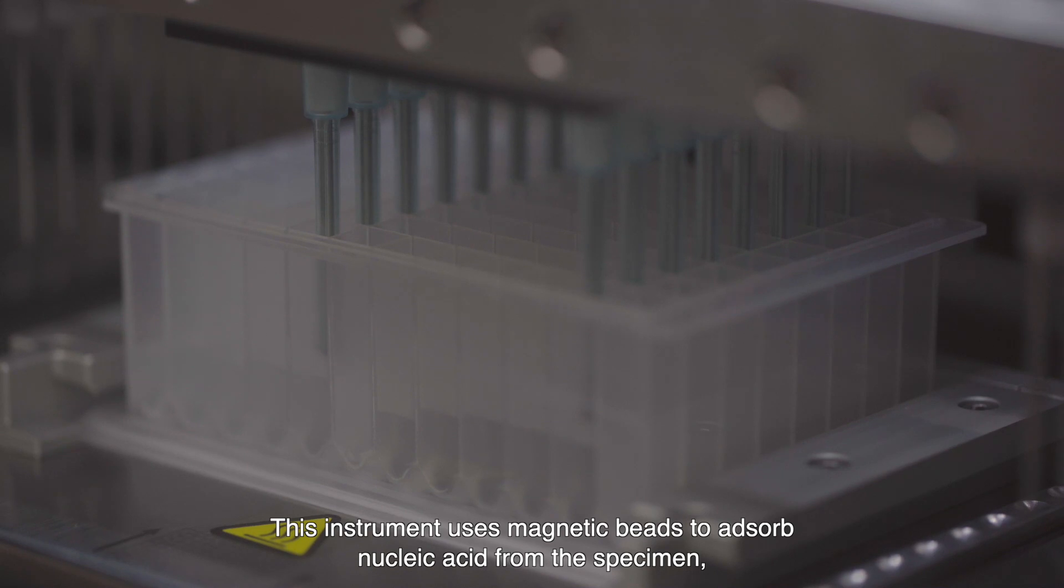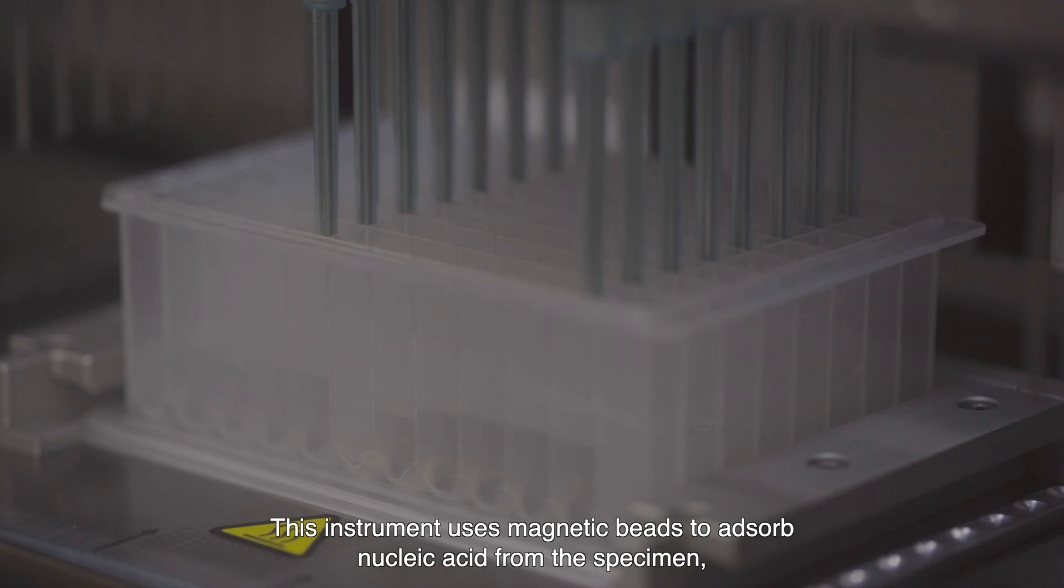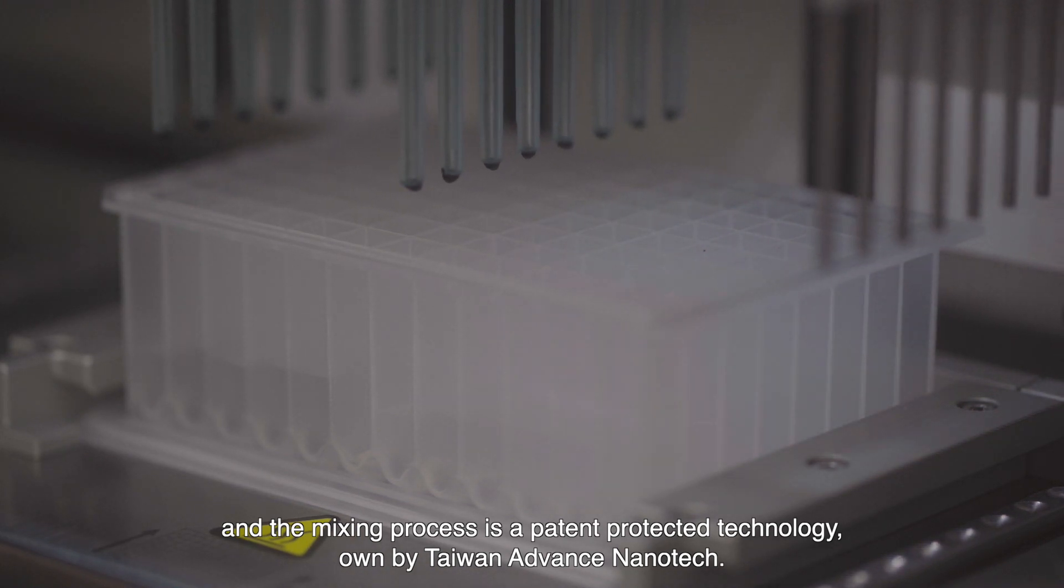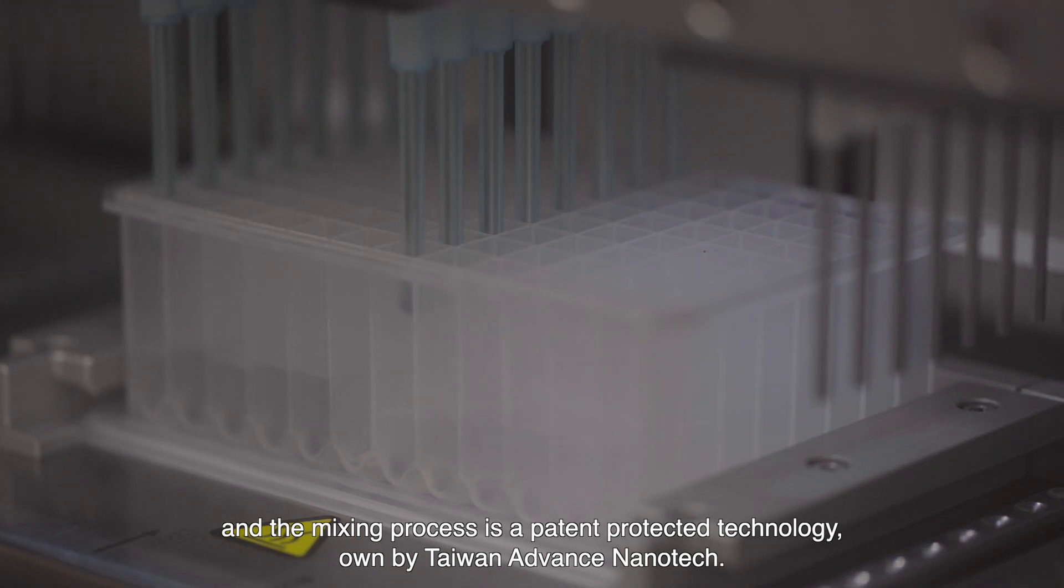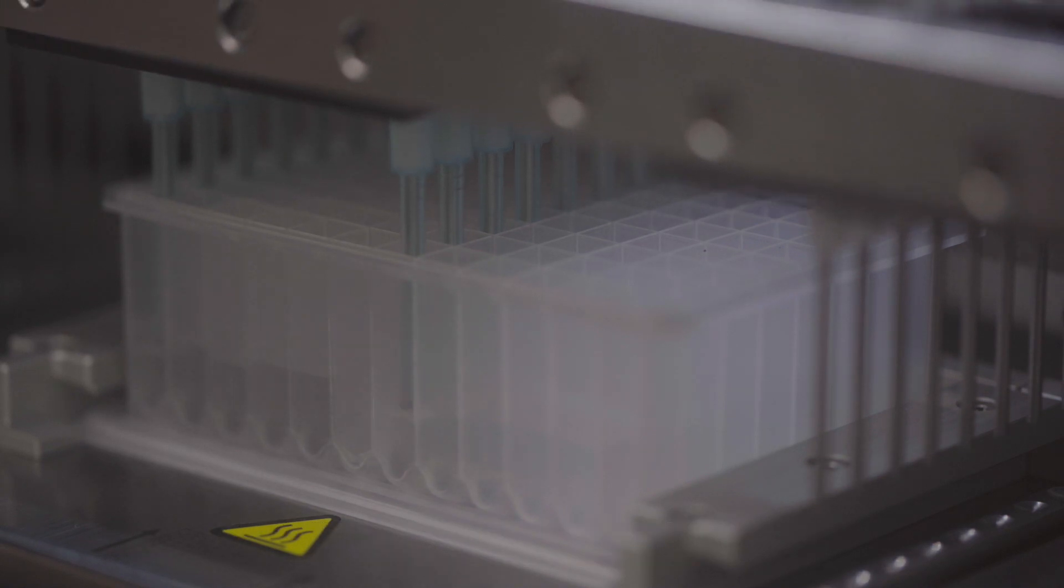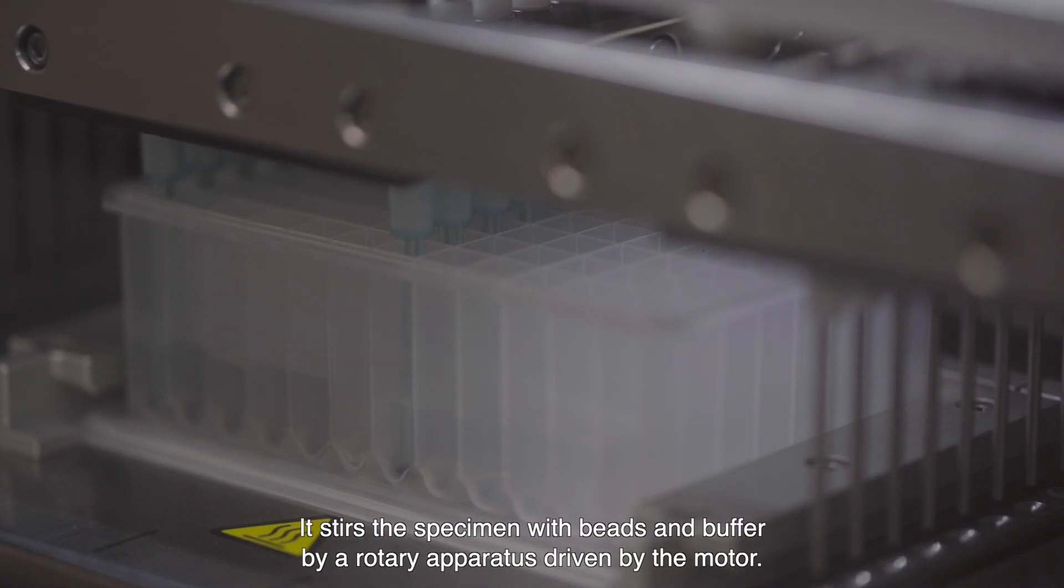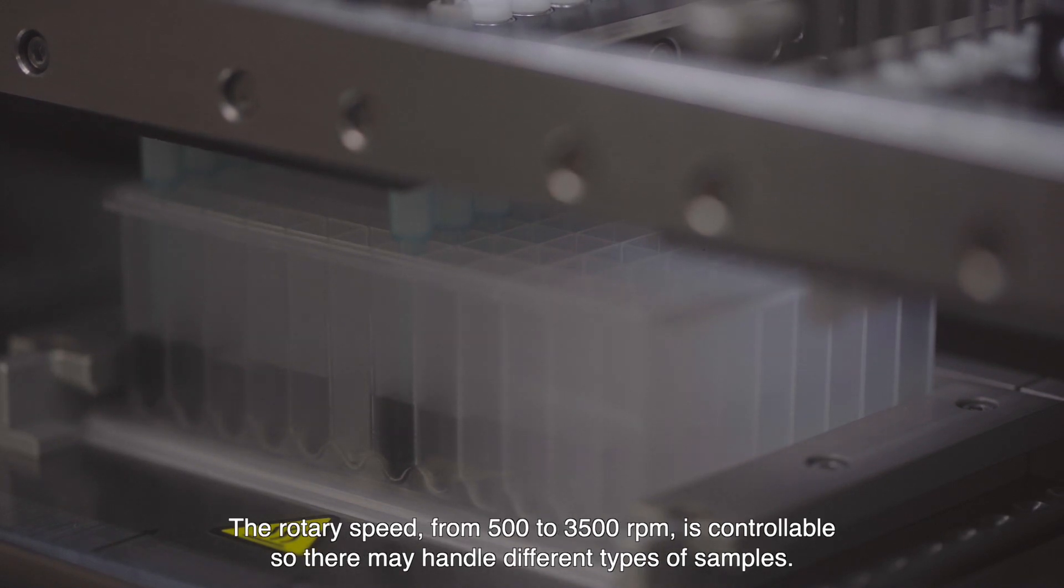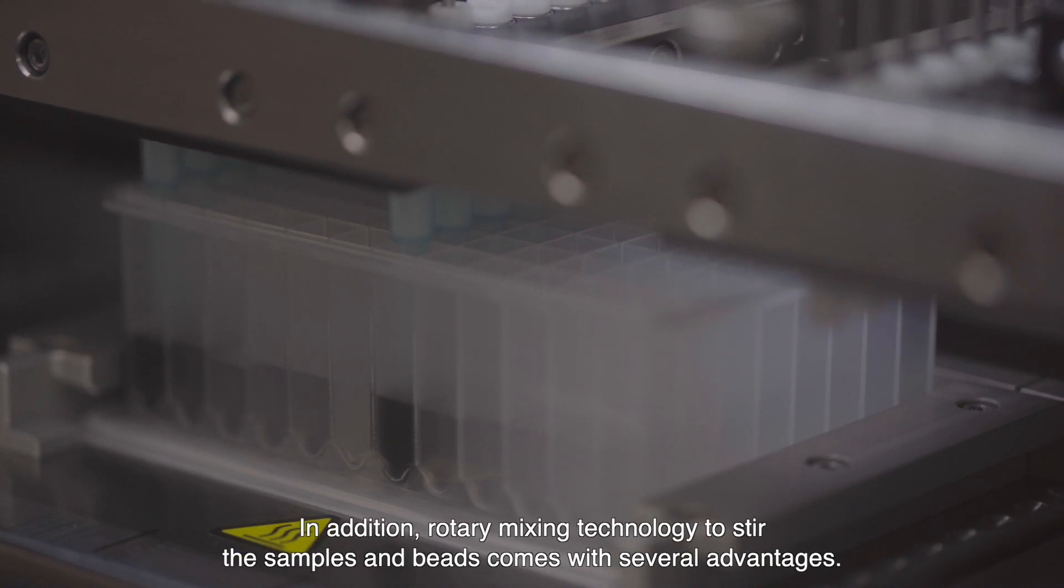This instrument uses magnetic beads to absorb nucleic acid from the specimen and the mixing process is a patent protected technology owned by Taiwan Advanced Nanotech. It stirs the specimen with beads and buffer via rotary apparatus driven by the motor. The rotary speed from 500 to 3500 rpm is controllable so that it may handle different types of samples. In addition, rotary mixing technology comes with several advantages.